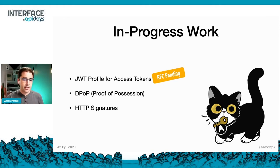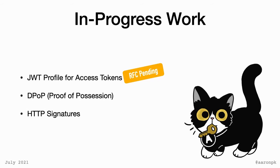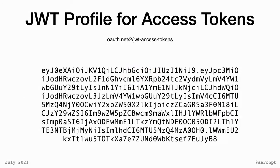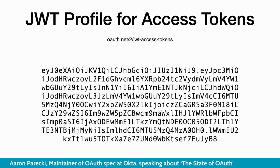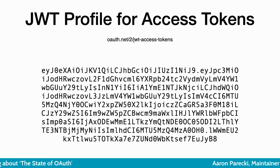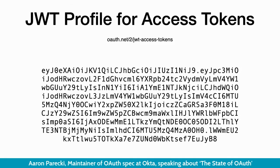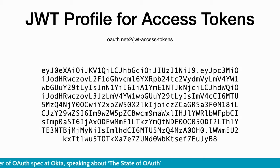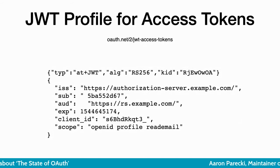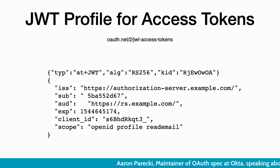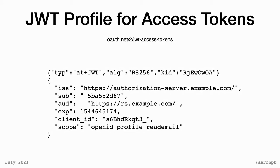There are three in-progress drafts worth calling out. First is the JSON Web Token Profile for Access Tokens, which is now pending its RFC number and very close to being finalized. Basically, this spec says: if you're going to implement access tokens as a JSON Web Token, here are the things to keep in mind and the best way to do it. Access tokens don't have to be JWTs — you can use a random string and it will work fine — but if you want JWT benefits, the spec defines which claims to include and how to validate them.